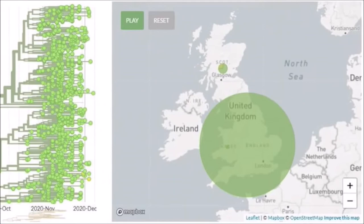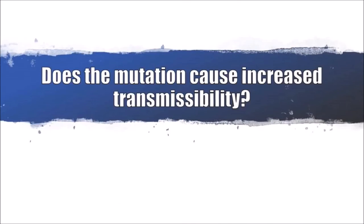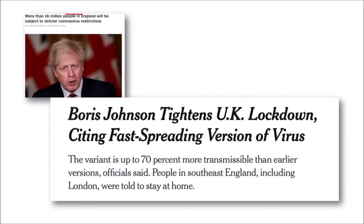Regardless of the process, it seems pretty clear that this lineage originated in England. And that brings us to the third and final question. Does this matter? Are these mutations really causing the virus to spread faster?